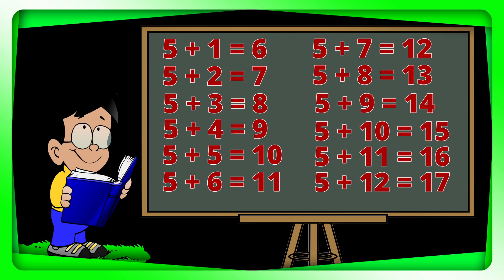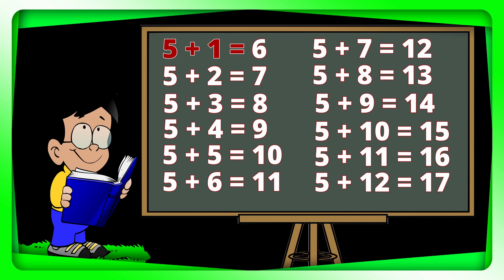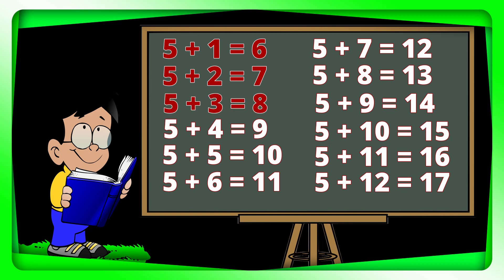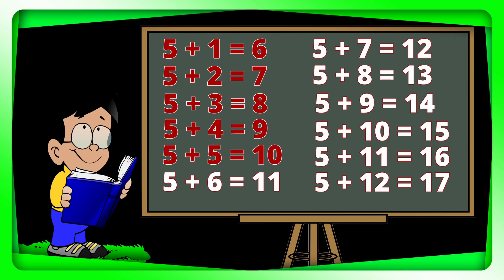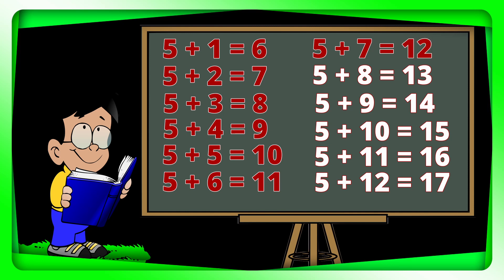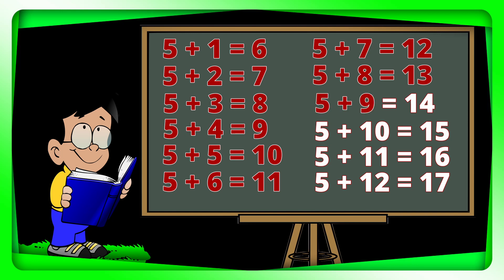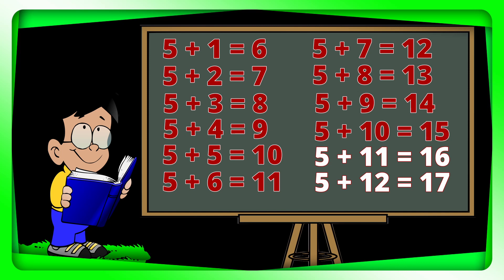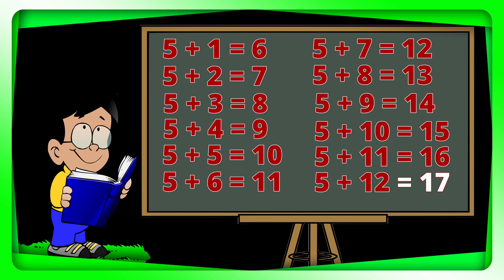Let's do it again. 5 plus 1 equals 6. 5 plus 2 equals 7. 5 plus 3 equals 8. 5 plus 4 equals 9. 5 plus 5 equals 10. 5 plus 6 equals 11. 5 plus 7 equals 12. 5 plus 8 equals 13. 5 plus 9 equals 14. 5 plus 10 equals 15. 5 plus 11 equals 16. 5 plus 12 equals 17.